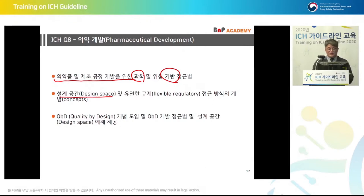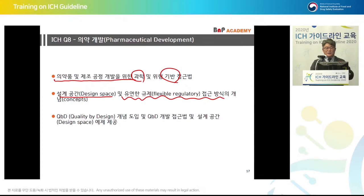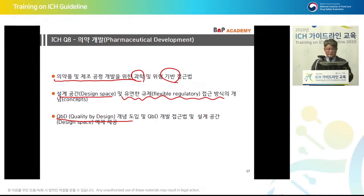The goal and objective of ICH Q8 is a scientific and risk-based approach for pharmaceutical development and process development. Design space and flexible regulatory approach are key concepts. As discussed in Q12 during the morning, flexible regulatory approach — such as QBD — will help get approval for changes or expedite the approval process. By having accurate understanding of the process, the quality of the product gets improved and risk gets reduced. Introduction of QBD and design space are included in ICH Q8.